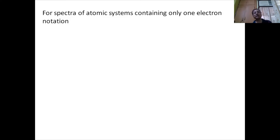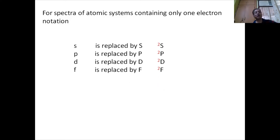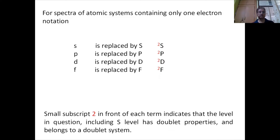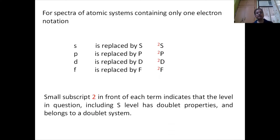For spectra of atomic systems containing one electron, the notations are: small s is replaced by capital S, small p is replaced by capital P, small d is replaced by capital D, and small f is replaced by capital F. A small subscript 2 in front of each term indicates that the level in question, including the S level, has doublet properties and they belong to a doublet system.